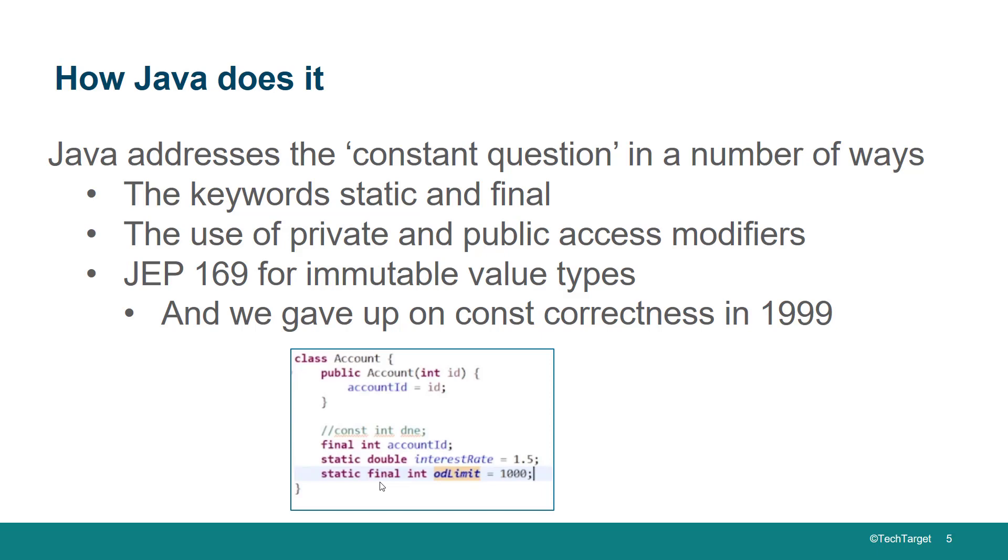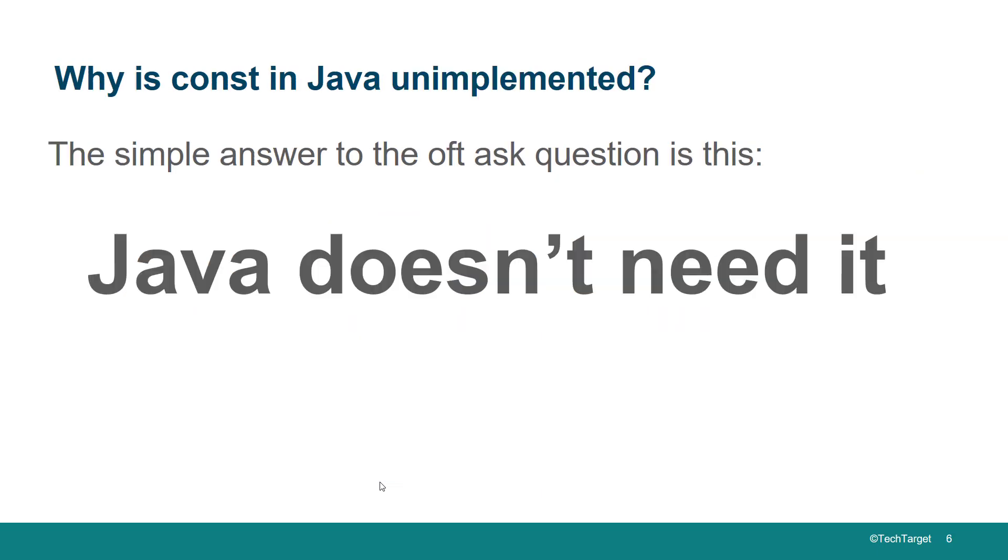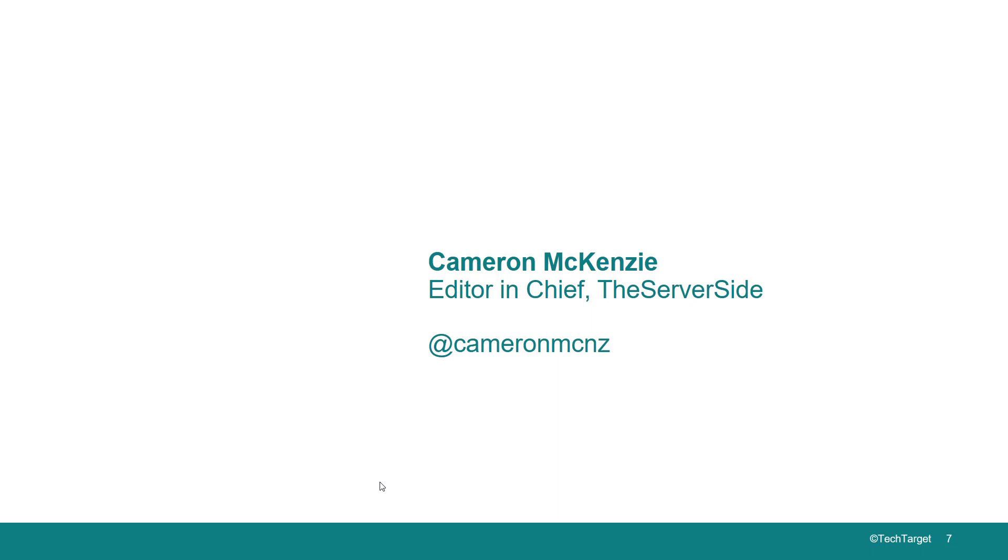So why is const in Java unimplemented? There's an easy answer: Java doesn't need it. We've got other ways to achieve constant variables in Java. We don't need the const keyword. And there you go, that's why the const keyword is not implemented in Java.